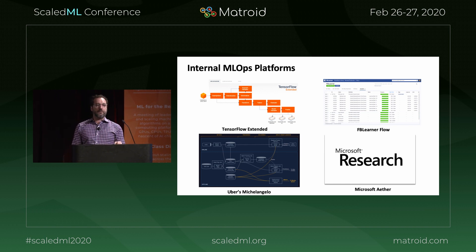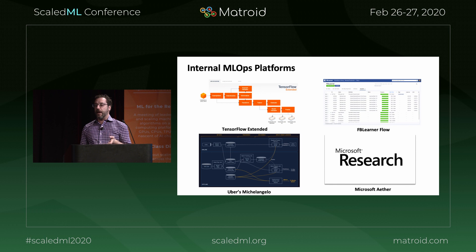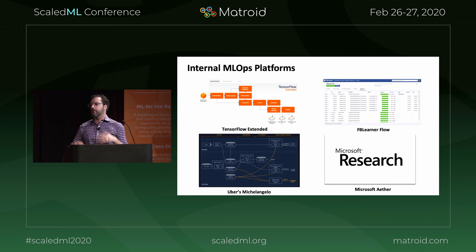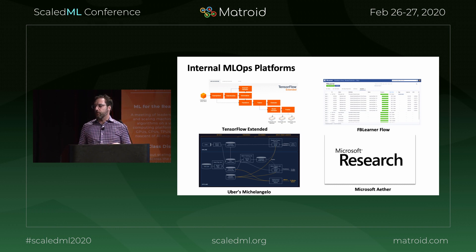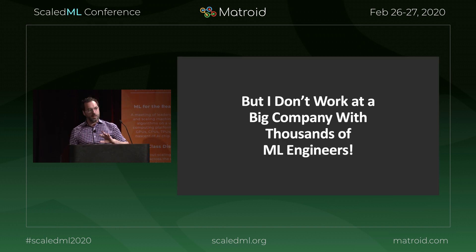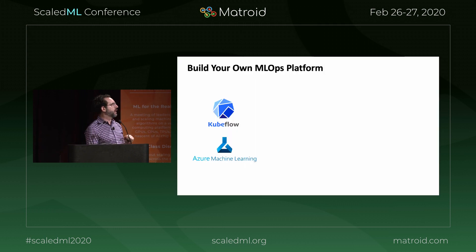Lots of folks have gone out and built internal systems for doing exactly this. At Google, they had TensorFlow Extended, internally called MLX. Facebook has FB Learner Flow, Uber has Michelangelo, Microsoft has Ether — and this is just a small set. More often than not, once you reach a certain size of data science team, you're going to need some form of process. But you don't want to work at a large company with thousands of engineers — you want to do this yourself, and you can.